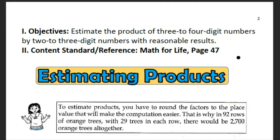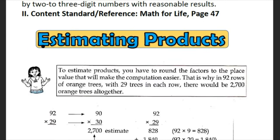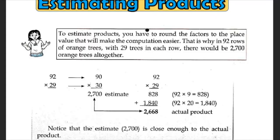In this video class, we will be learning about estimating products. To estimate products, you have to round the factors to the place value that will make the computation easier. That is why in 92 rows of orange trees with 29 trees in each row, there would be 2,700 orange trees altogether.